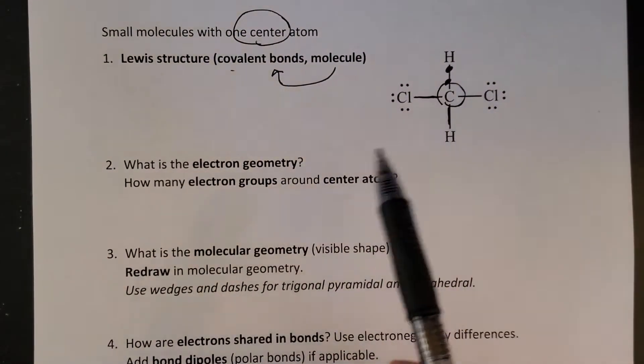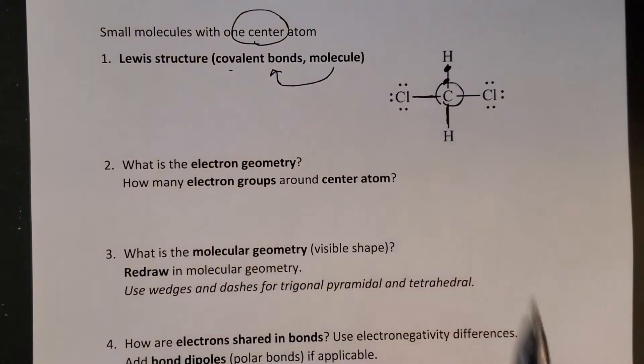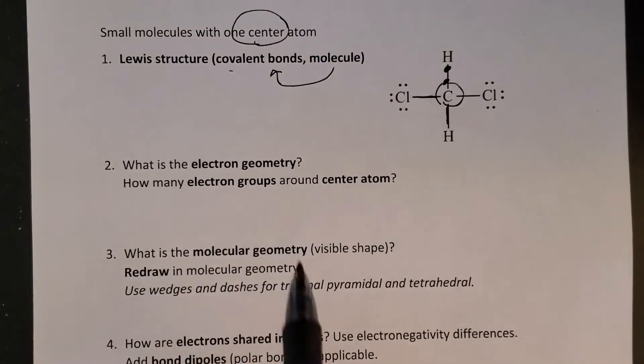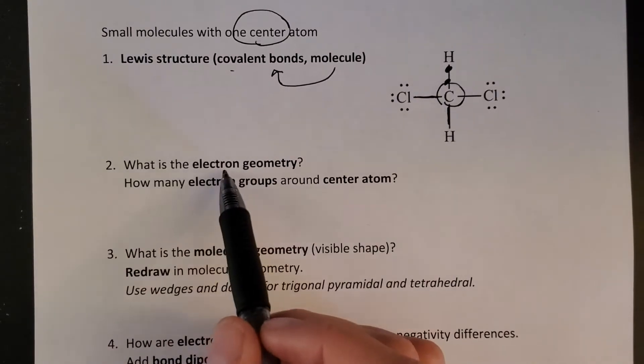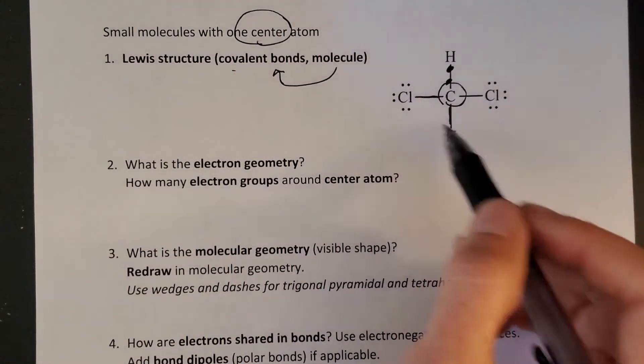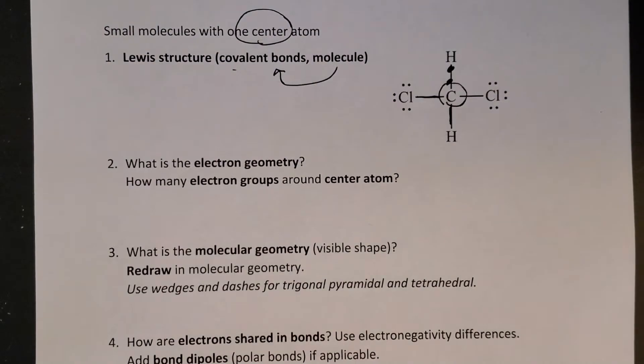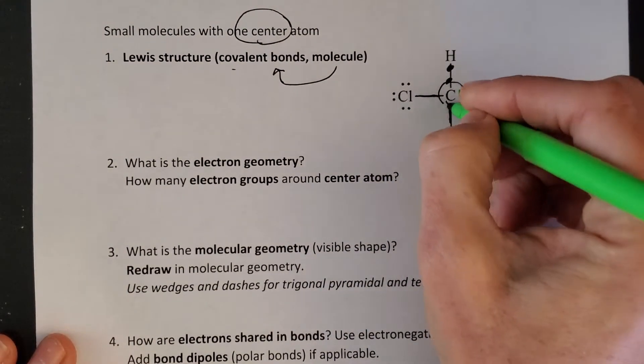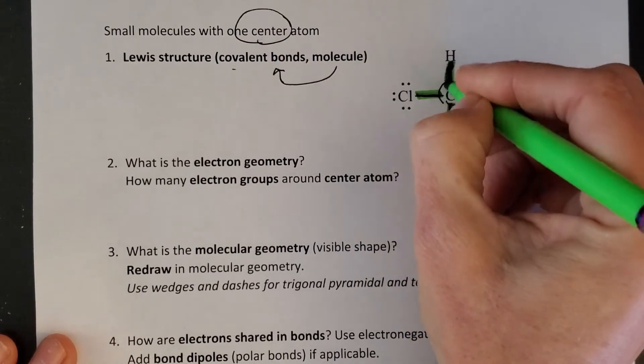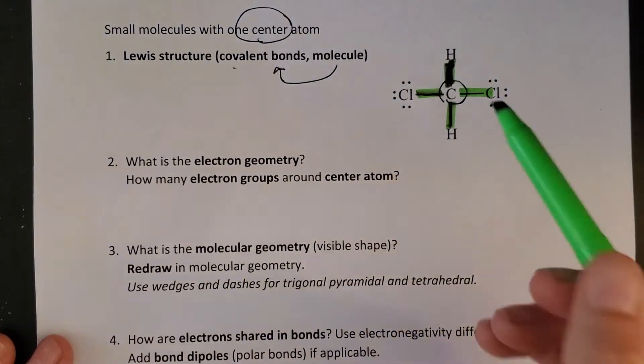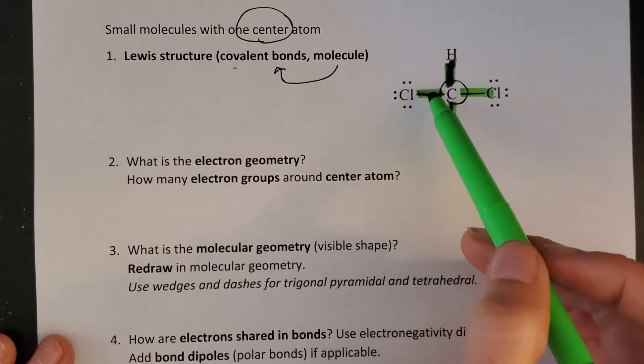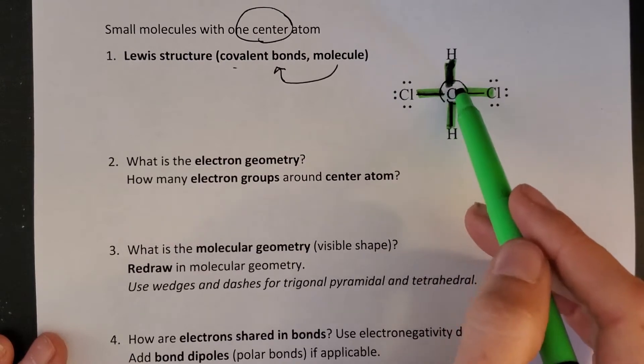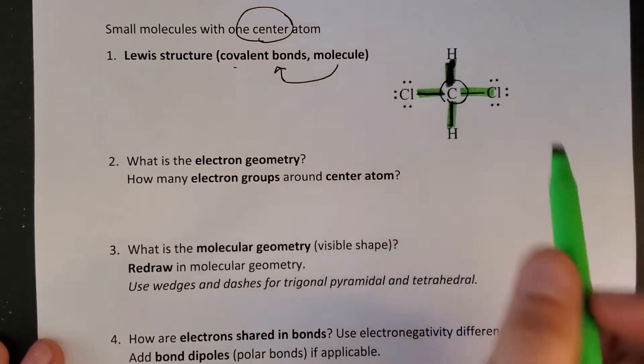The first skill is getting the Lewis structure into the right shape with dipoles. First we need to know the electron geometry or arrangement of electrons around the center atom. To answer that, we need to know how many electron groups want space. These are all negatively charged so they want space from each other. Single bonds, double bonds, triple bonds each count as one group, and lone pairs also count as electron groups.